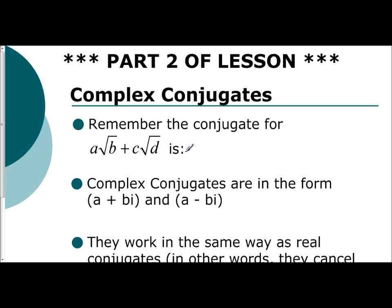So if I have A radical B and C radical D — the same terms — except we use the opposite operation. So instead of a plus sign, we'll use a minus sign. The conjugate for A radical B plus C radical D is A radical B minus C radical D, and vice versa. The conjugate of the minus version is the one with the plus sign.